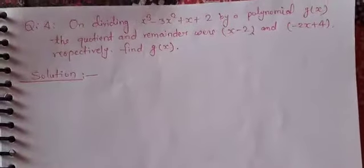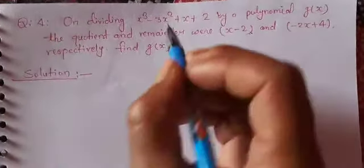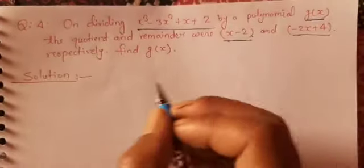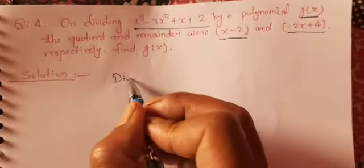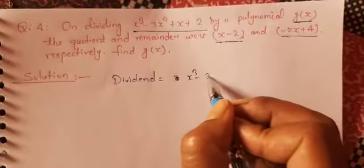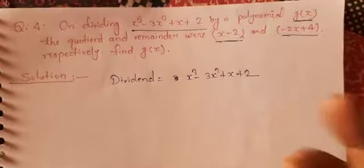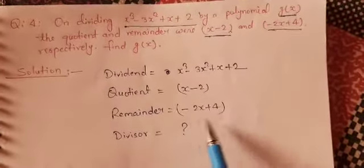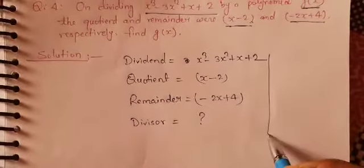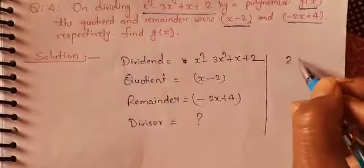Now similarly, we can also do another type of question. In this problem, a polynomial p(x) when divided by g(x) gives a certain quotient and remainder, and g(x) is not given — we have to find g(x), the divisor. The dividend is x³ − 3x² + x + 2, the quotient and remainder are given, and we have to find the divisor.